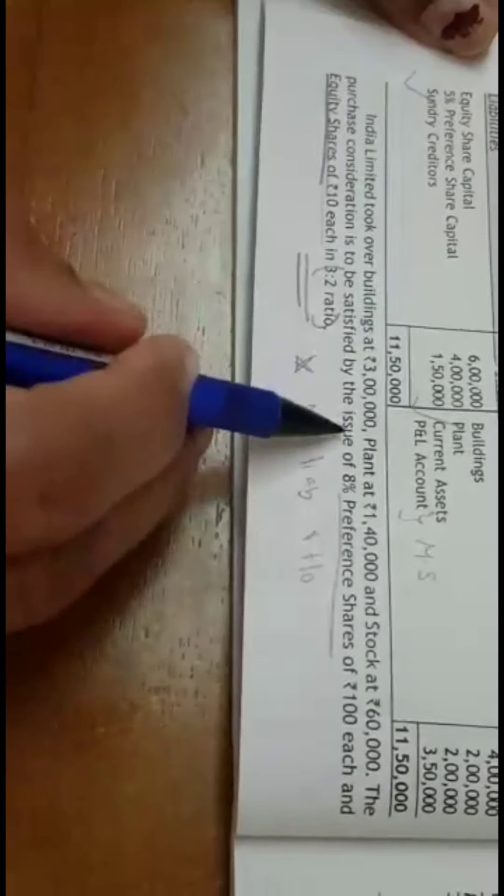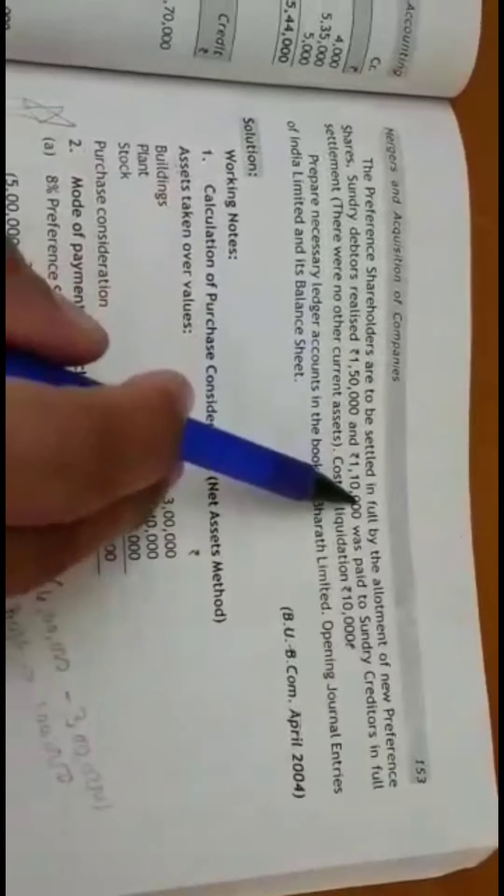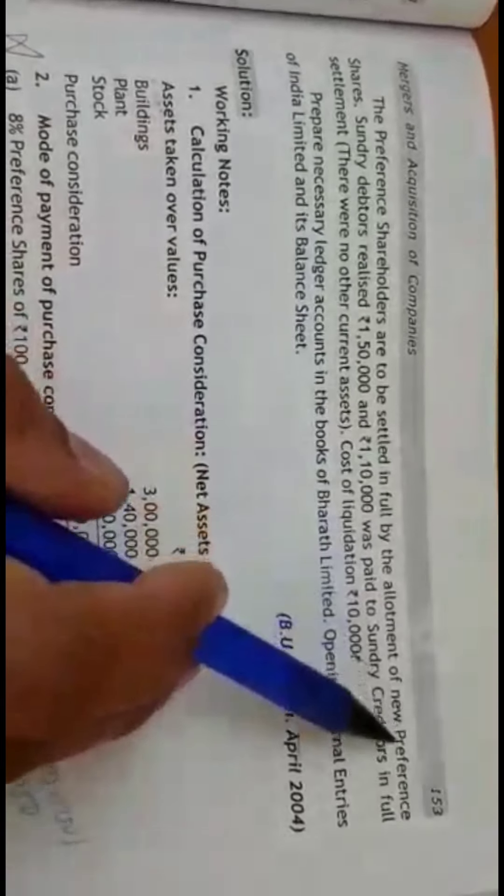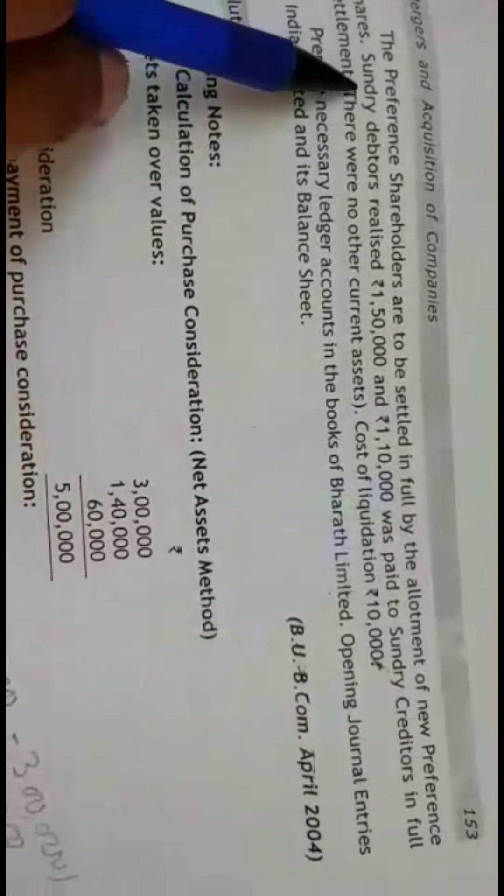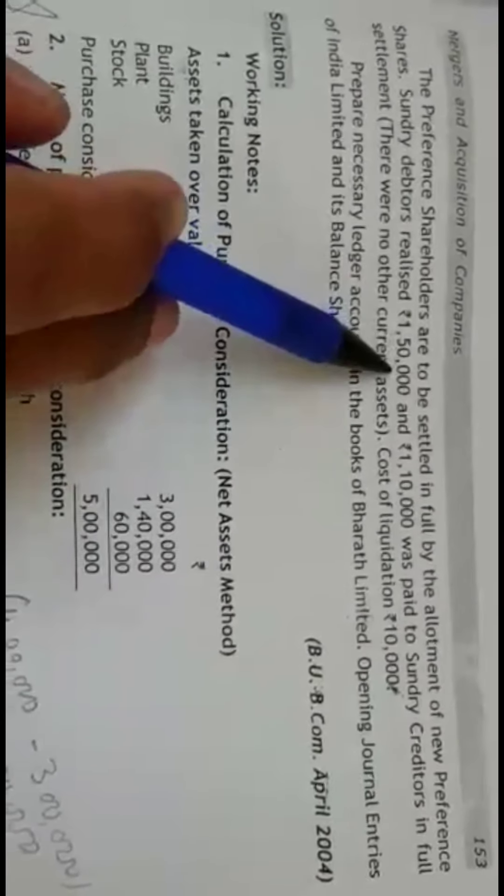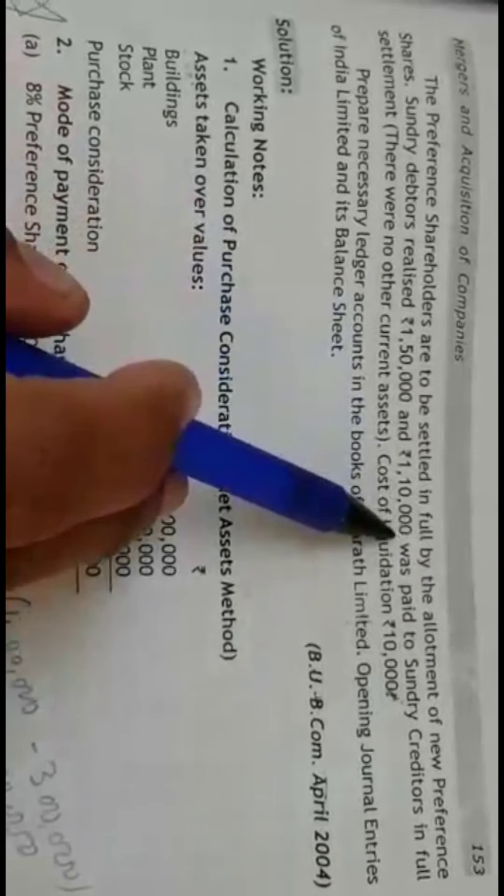In this problem, you have to work out PC under net asset method. Why? Because they have given you the value of assets taken over. The preference shareholders have to be settled in fully by the allotment of new preference shares.